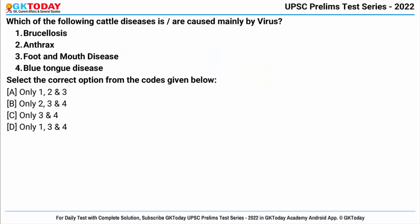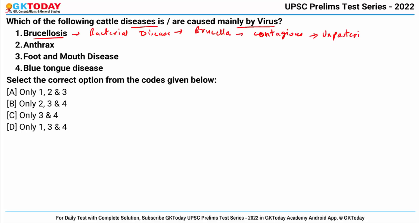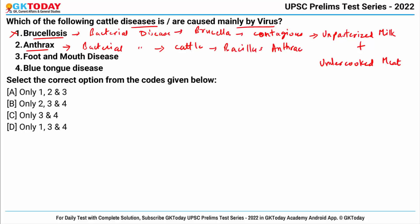Question number one: which of the following cattle diseases are caused mainly by virus? First is Brucellosis — this is actually a bacterial disease caused by Brucella bacteria. It is highly contagious and transmitted through unpasteurized milk and undercooked meat, so this is wrong. Second is Anthrax — this is also not a viral disease; it is a bacterial disease affecting cattle, caused by Bacillus anthracis and transmitted via spores. So again it is wrong.